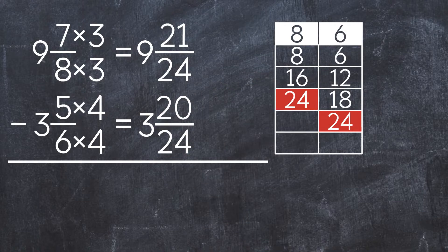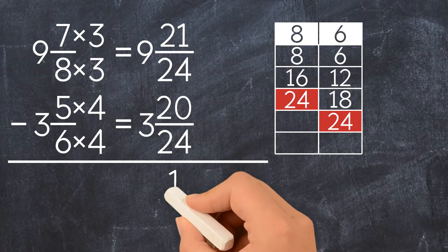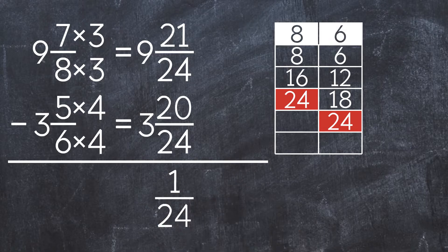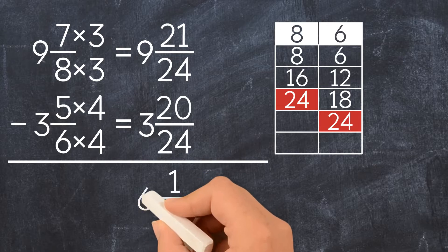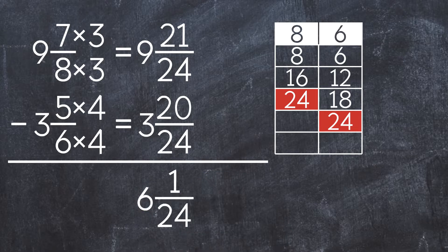Now we can subtract the mixed numbers. First, we subtract the fractions: 21 twenty-fourths minus 20 twenty-fourths is 1 twenty-fourth. Next, we subtract the whole numbers: 9 minus 3 equals 6. So the answer is 6 and 1 twenty-fourth.